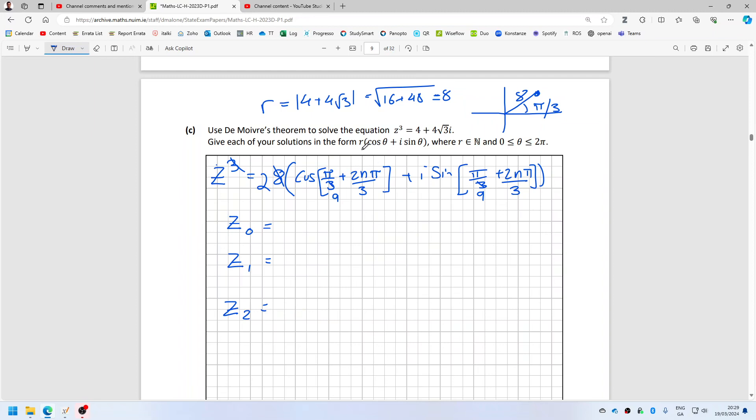And then the next one when n equals 1, that's z_1 equals 2 times cos 7 pi over 9 plus i sine 7 pi over 9.